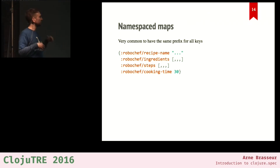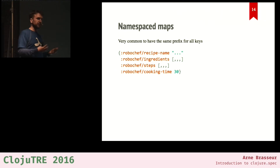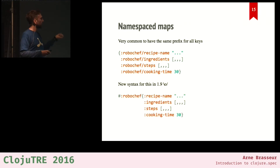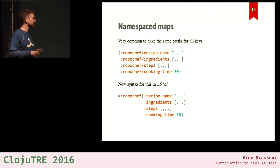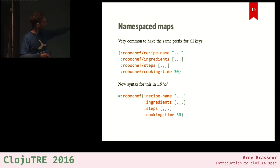It's quite common when using namespace keywords to have maps where every single key has the same prefix. Having to write out the full robo-chef prefix for every key gets tedious and repetitive. So Clojure 1.9 is going to introduce a new shorthand syntax you can recognize by the hash sign — a reader macro that will expand the short form to the fully prefixed map.